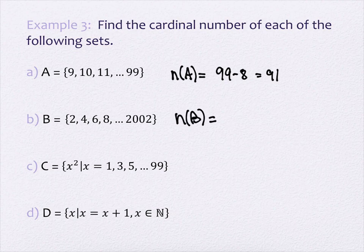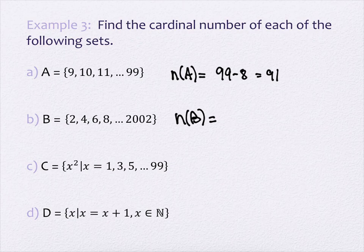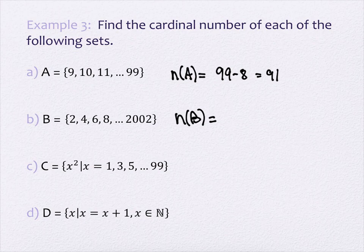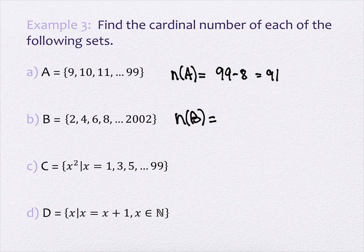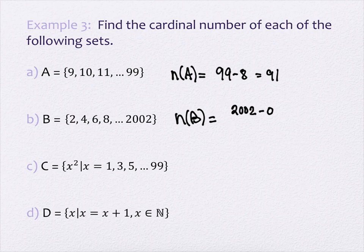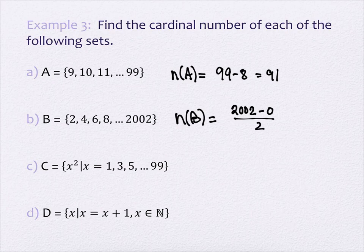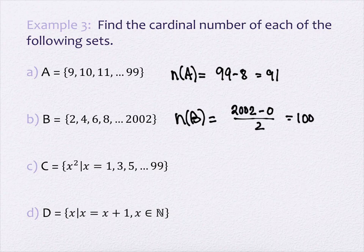How about B? 2, 4, 6, 8, all the way up to 2,002. How many are there? It is 1,001. So we have 2,002 at the end minus the number before in sequence. The sequence is starting at 2. The one before it would be at 0. And then I'm skip counting by 2s. Just the evens. So this gives me 1,001.